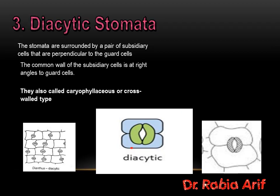The third important type of stomata is the diacytic stomata. These are stomata that are surrounded by a pair of subsidiary cells that are perpendicular to the guard cells. This means there are two subsidiary cells occupying the guard cells, and they are perpendicular — at a right angle of 90 degrees — to the guard cells. They are also called caryophyllaceous or cross-walled stomata. For example, in the Dianthus plant, diacytic stomata are present.